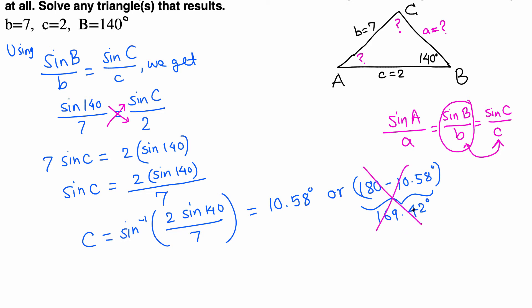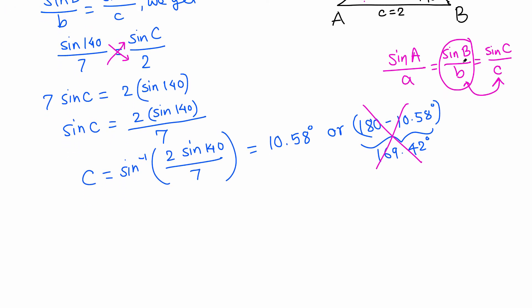Sometimes this can be possible if it's like 20—140 plus 20 would be fine. Here, 10 is fine because 140 plus 10 is just 150, so we'll get one triangle. So angle C is 10.58.